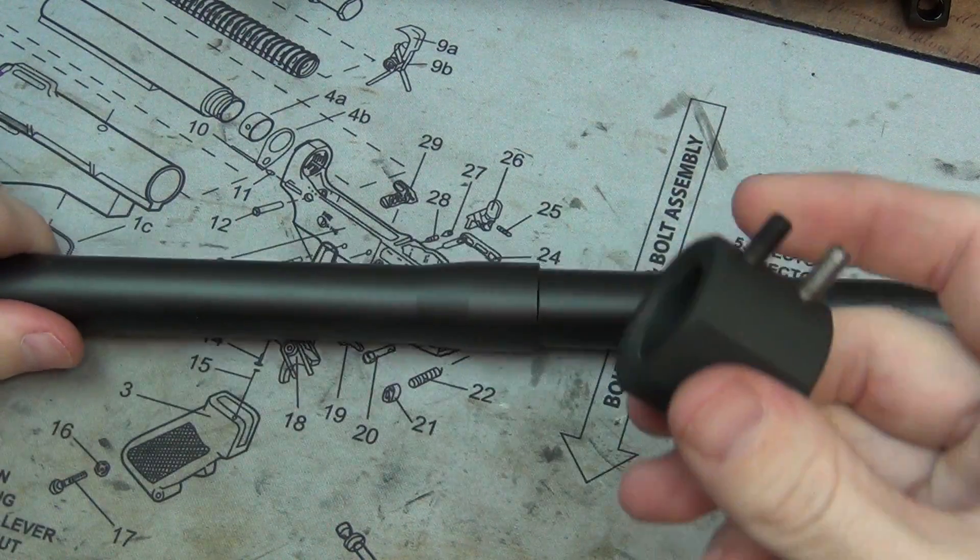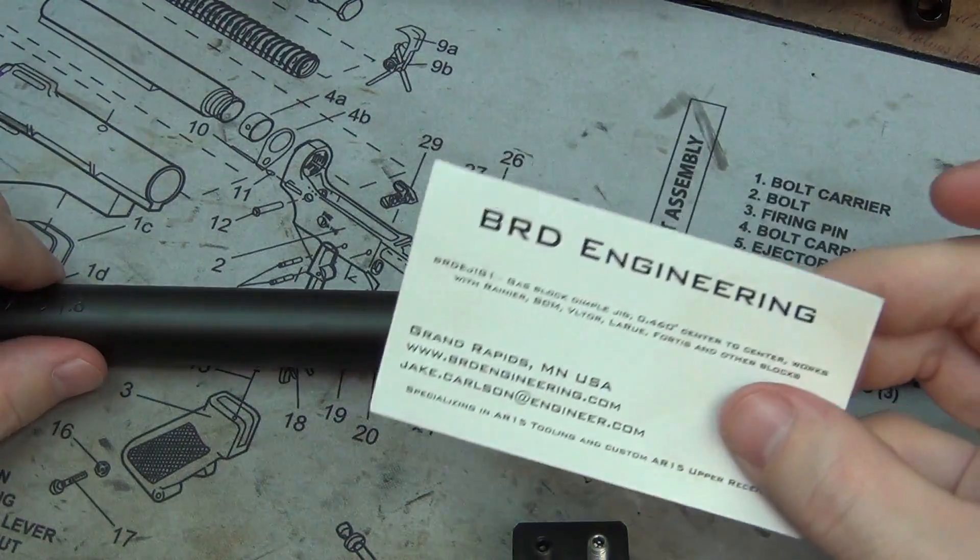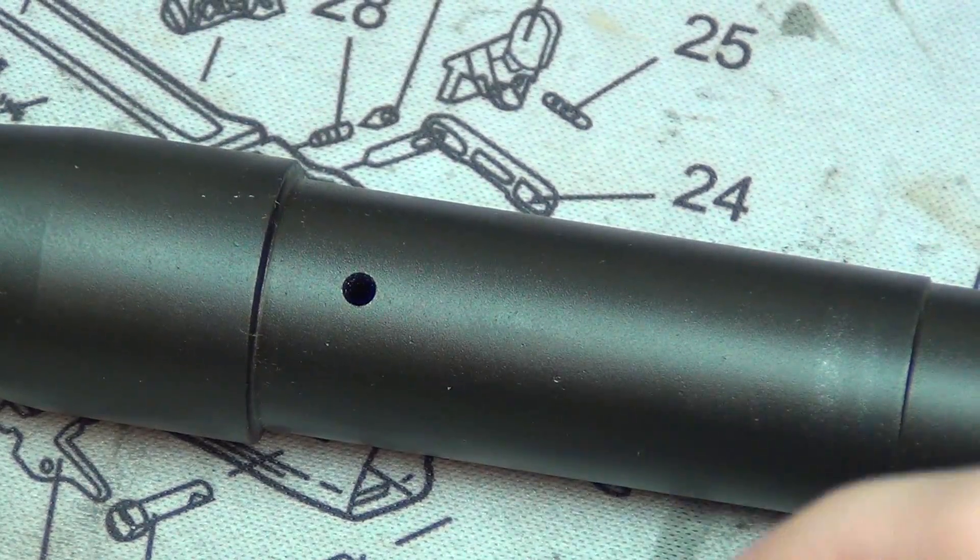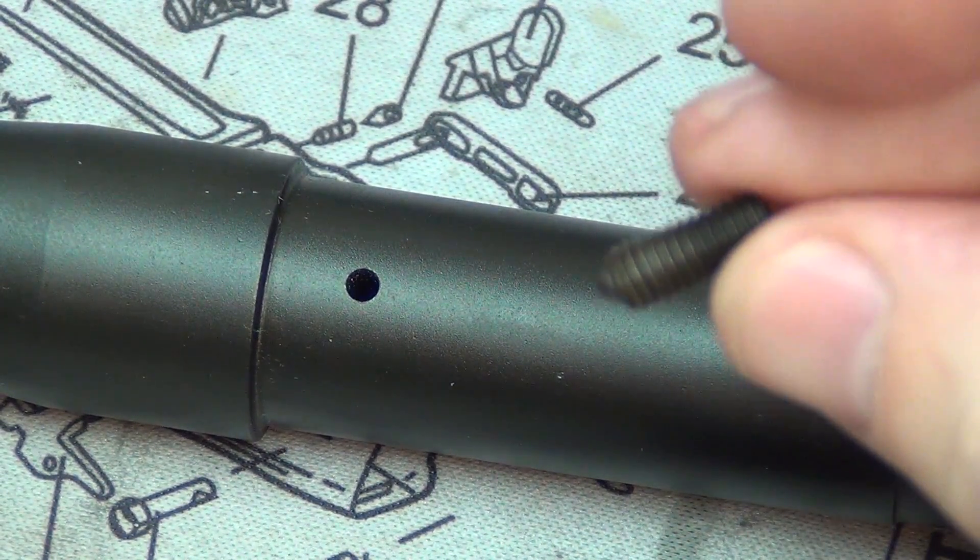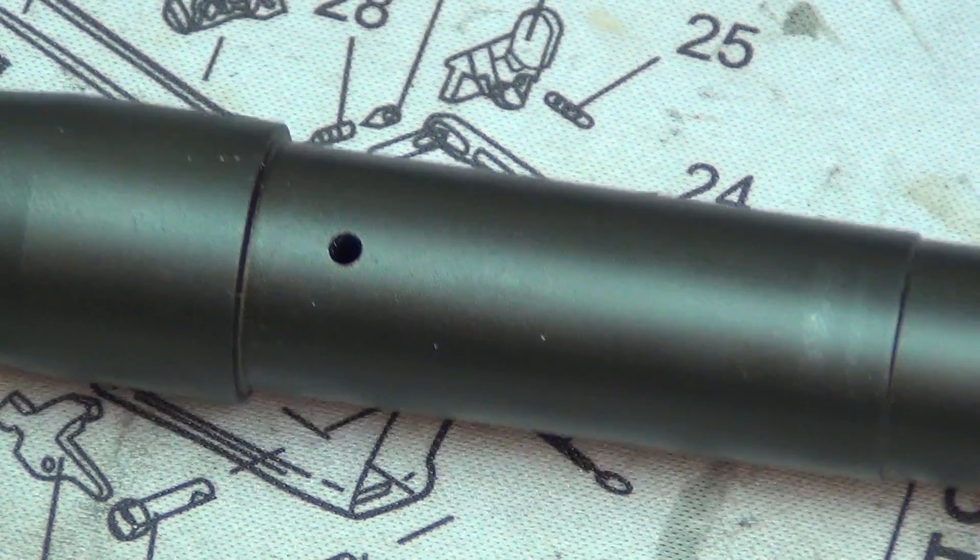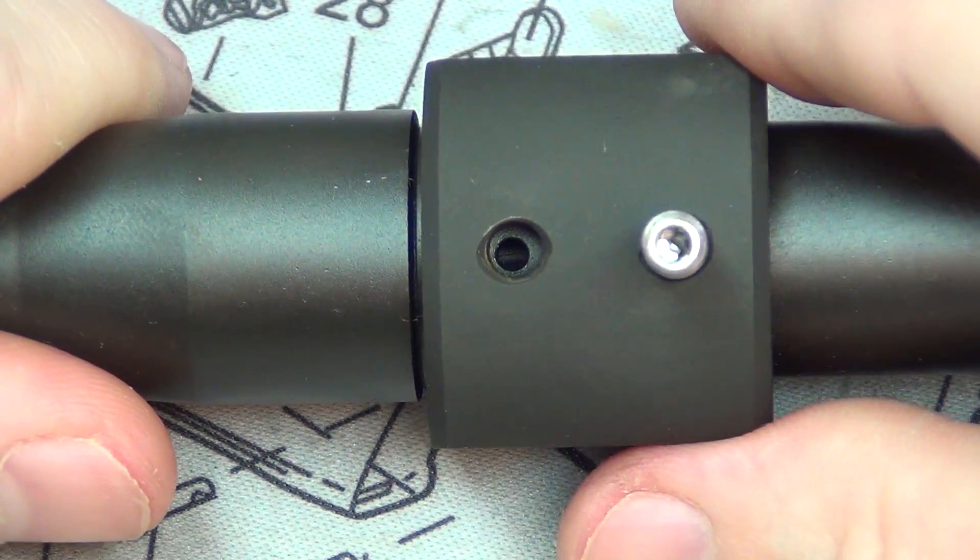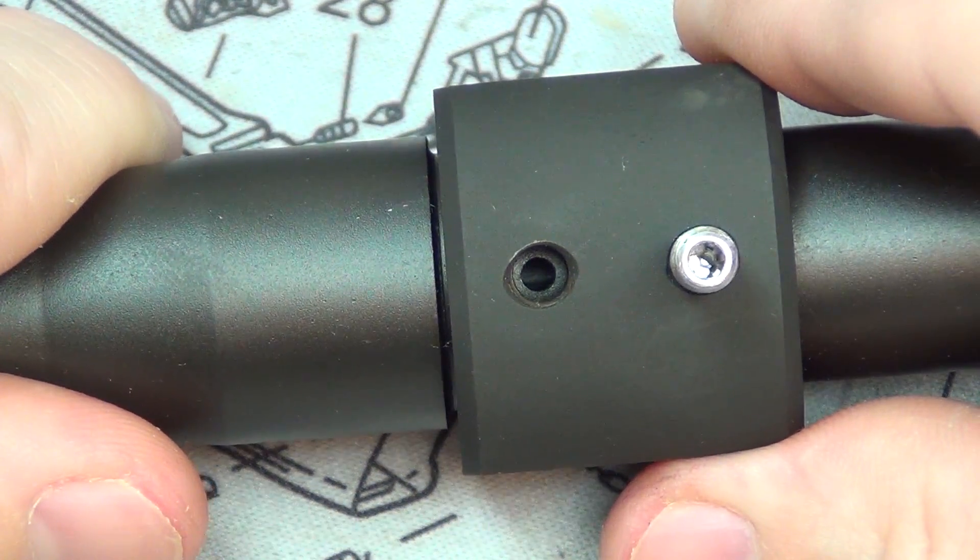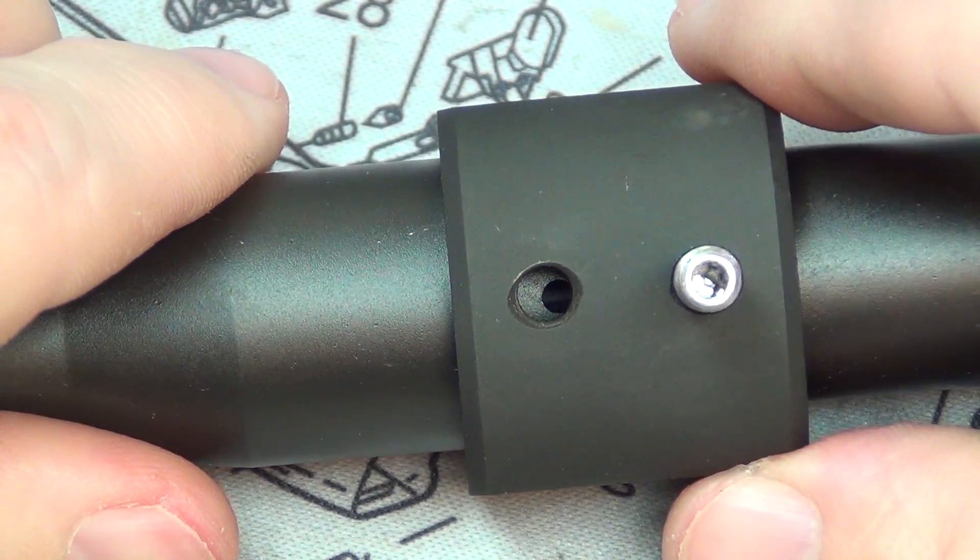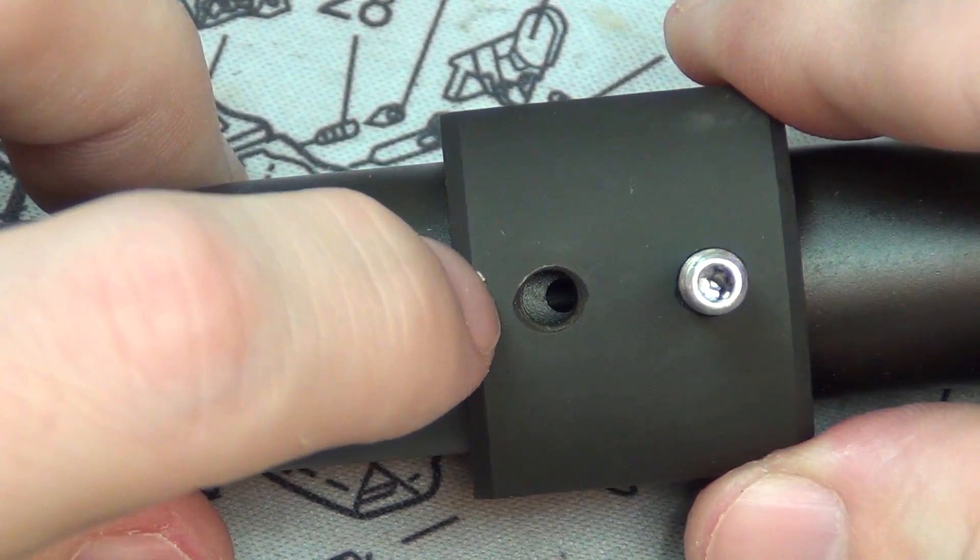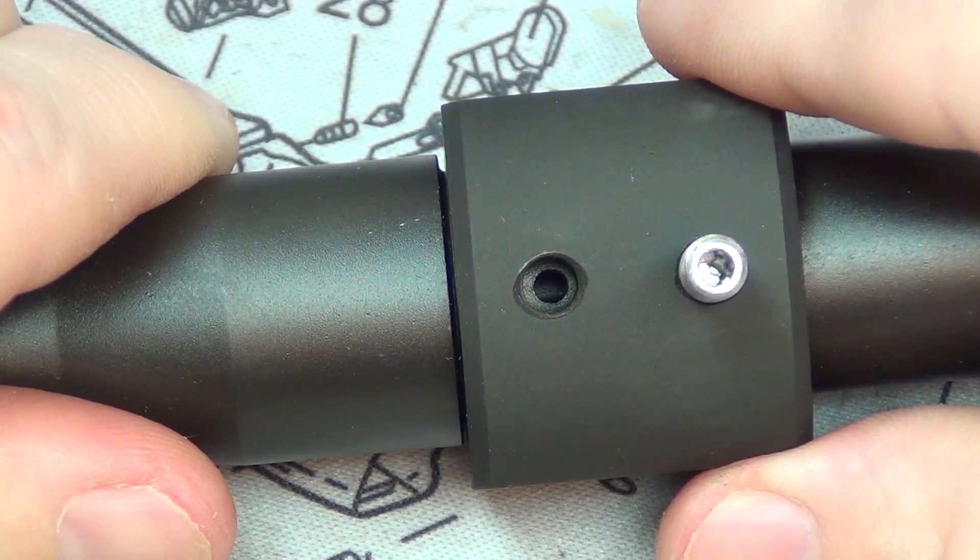Let's get started on dimpling your barrel with the BRD Engineering gas block dimpling jig. First, I'm going to take the pointed screw out and slide this over the barrel and line it up until that hole is perfectly centered. As you can see, if I put this all the way up against the shoulder, which is where the gas block would typically be, notice how the gas port is going to be slightly off-center. That's what's nice about this - I can put it right in the center.